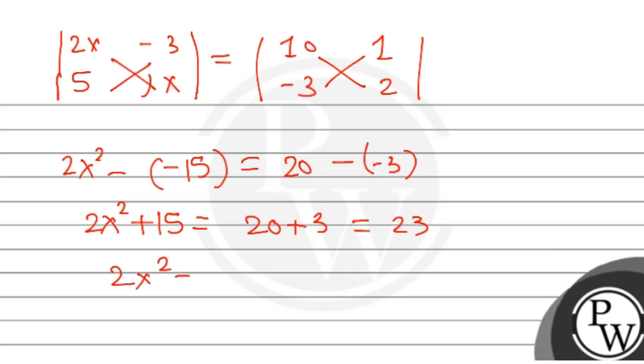2x² equals 23 minus 15. 23 minus 15 is 8. So x² equals 4.